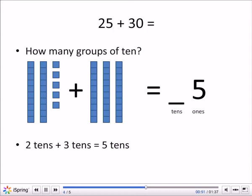Now how many groups of 10? In the first, we have two groups of 10: 10, 20. And then we have plus three groups of 10: 10, 20, 30.